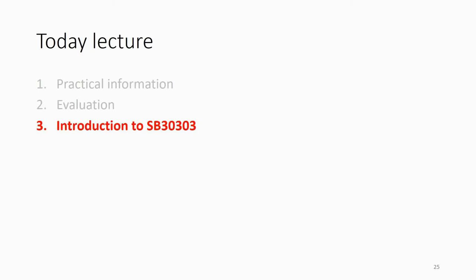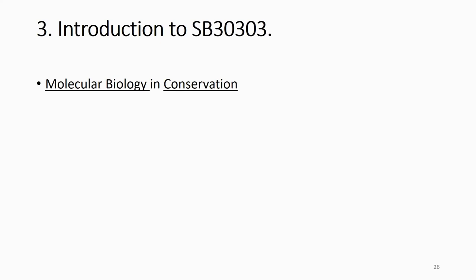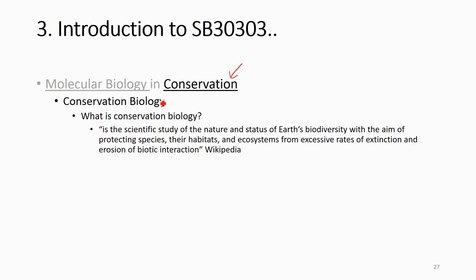I'm going to introduce what you're going to learn this semester in this course. The name of this course is Molecular Biology in Conservation. You have learned a little bit of molecular biology in another course — Biology, Cells and Genetics — over the past two years, and quite a lot about conservation biology. Conservation biology is defined as the scientific study of the nature and status of Earth's biodiversity, with the aim to protect species, their habitat, and ecosystems from excessive rates of extinction and erosion of biotic interaction.